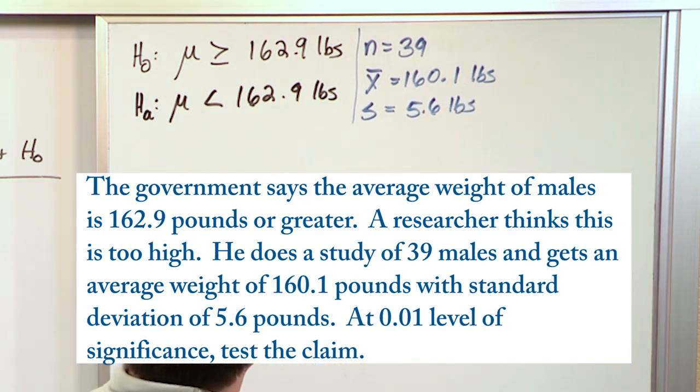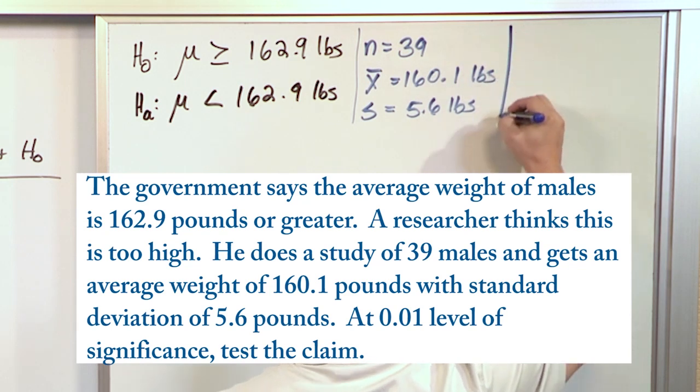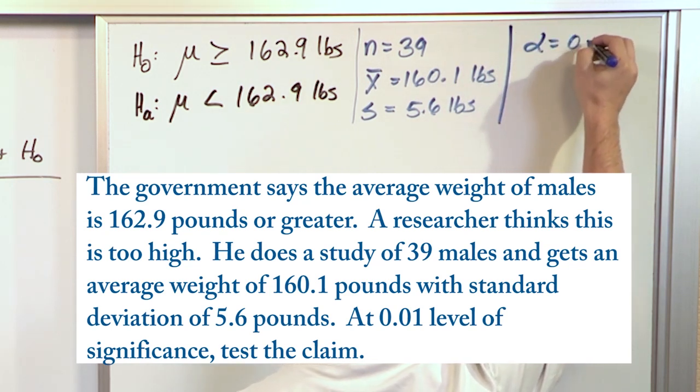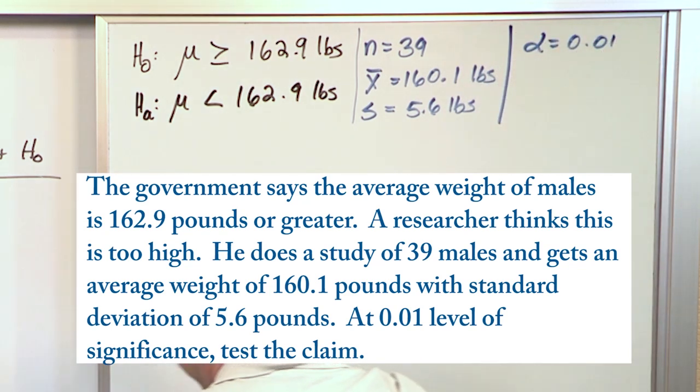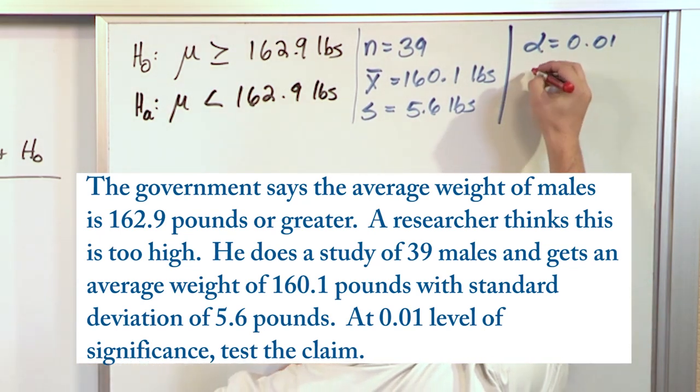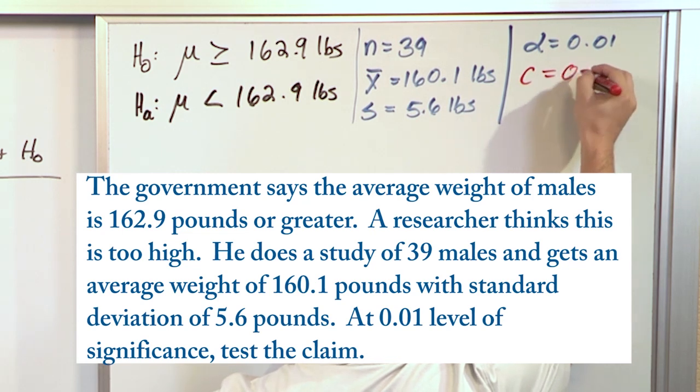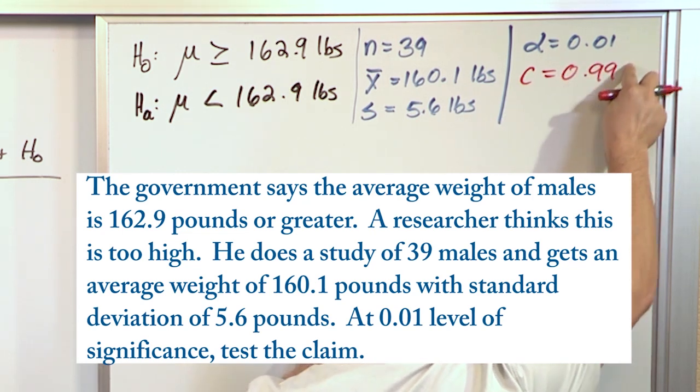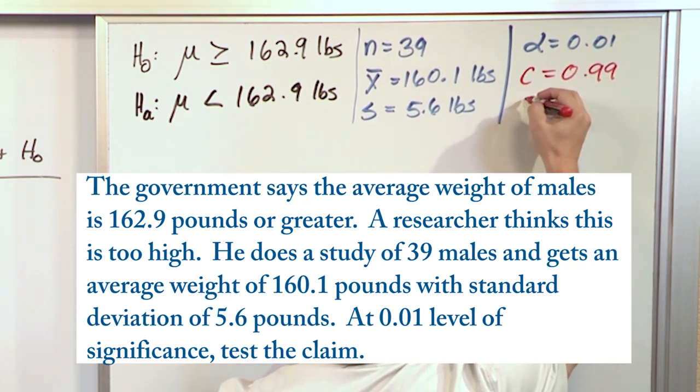So clearly you can see that you might think it's already going to be lining up with this. We're saying his research hypothesis is less than 162.9, and that's certainly what he got, so he's pretty happy. But then he goes over here and says we're testing at a level of significance 0.01. From this you should know right away that the level of confidence is 0.99. These have to add up to 1. So this is basically a 99% level of confidence.